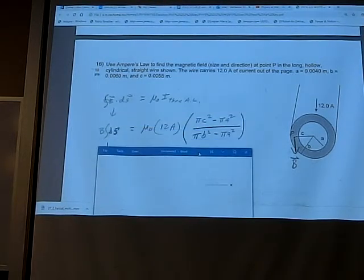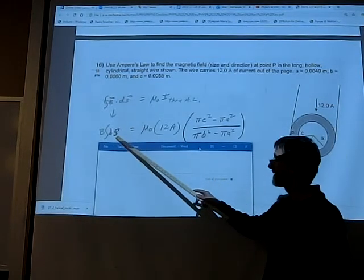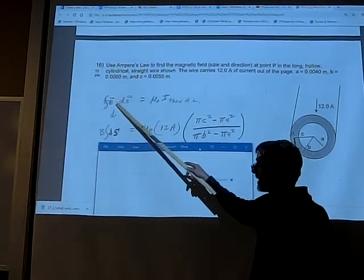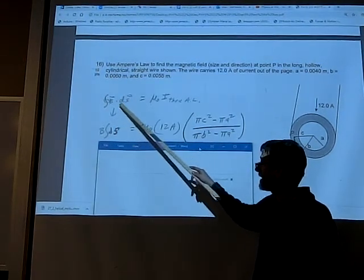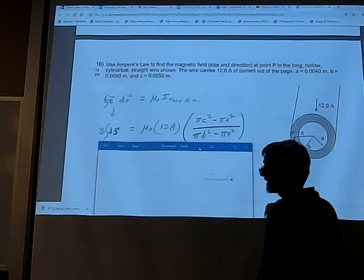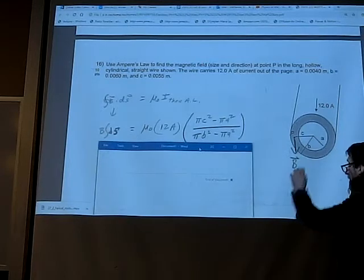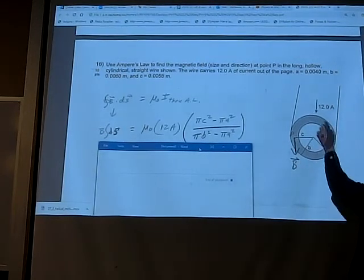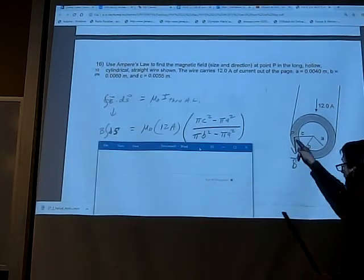The integral on the left is just going to reduce to B times integral ds. The dot product goes away because the angle between B and ds is zero, cosine of zero is one. The vector symbols go away because they point along that same direction, and B came out because it doesn't depend on which little piece of your circle you're picking.